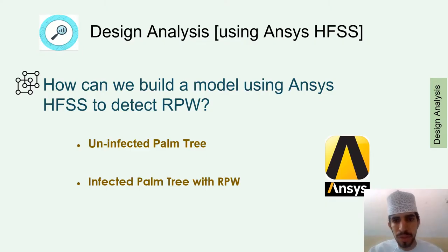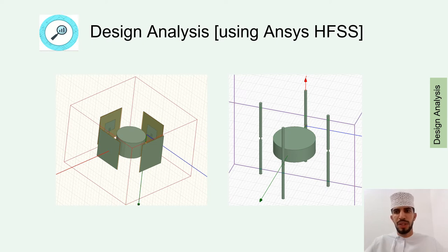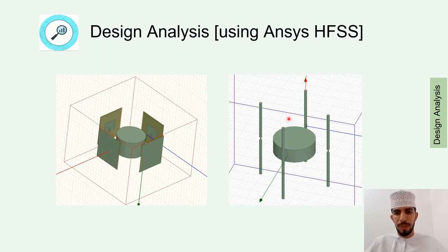In this chapter, we used ANSYS HFSS software. We simulated an unaffected palm tree and an infected palm tree with the red palm weevil using this software. We designed two models using ANSYS HFSS to detect the red palm weevil from the palm trunk at a frequency of 2.45 GHz: the first design is a four-patch antenna and the second design is a four-dipole antenna. We used two designs to check whether the results are consistent.